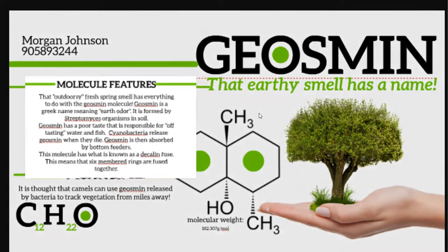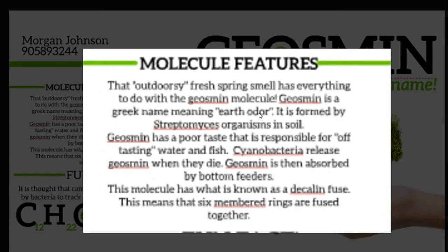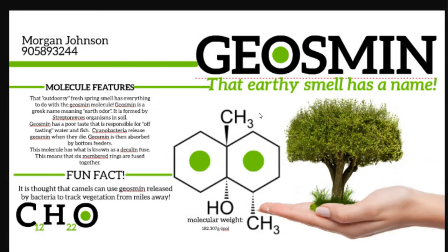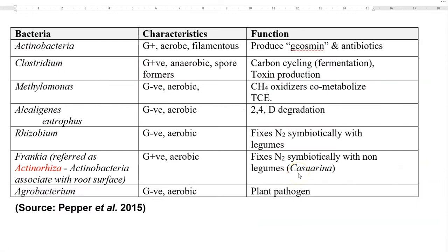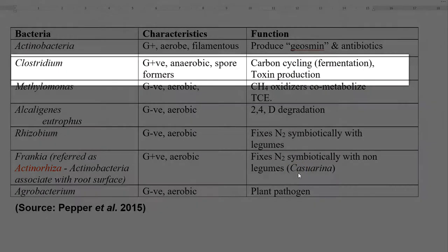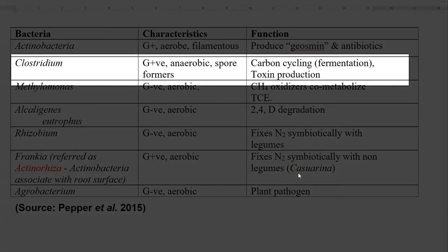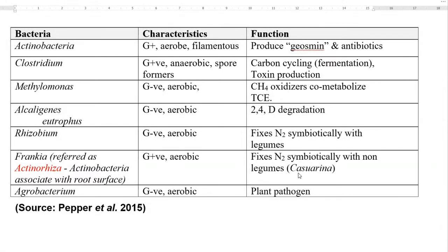Cyanobacteria also produce Geosmin during their death, and this Geosmin can be absorbed by bottom-feeding organisms. The next important organism in the heterotrophic group is Clostridium. They are gram positive, anaerobic, and spore-forming organisms.